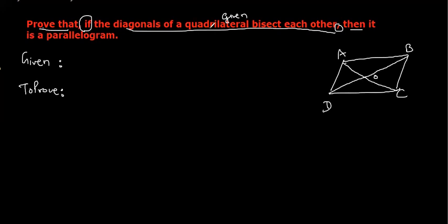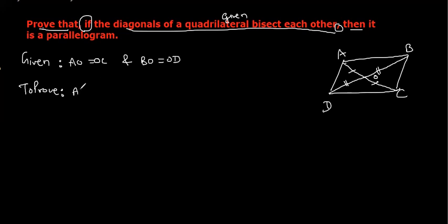If diagonals of a quadrilateral bisect each other — that means two diagonals bisect each other — this is equal to this and this is equal to this. So given: AO equals OC, and OB equals OD. To prove: ABCD is a parallelogram.